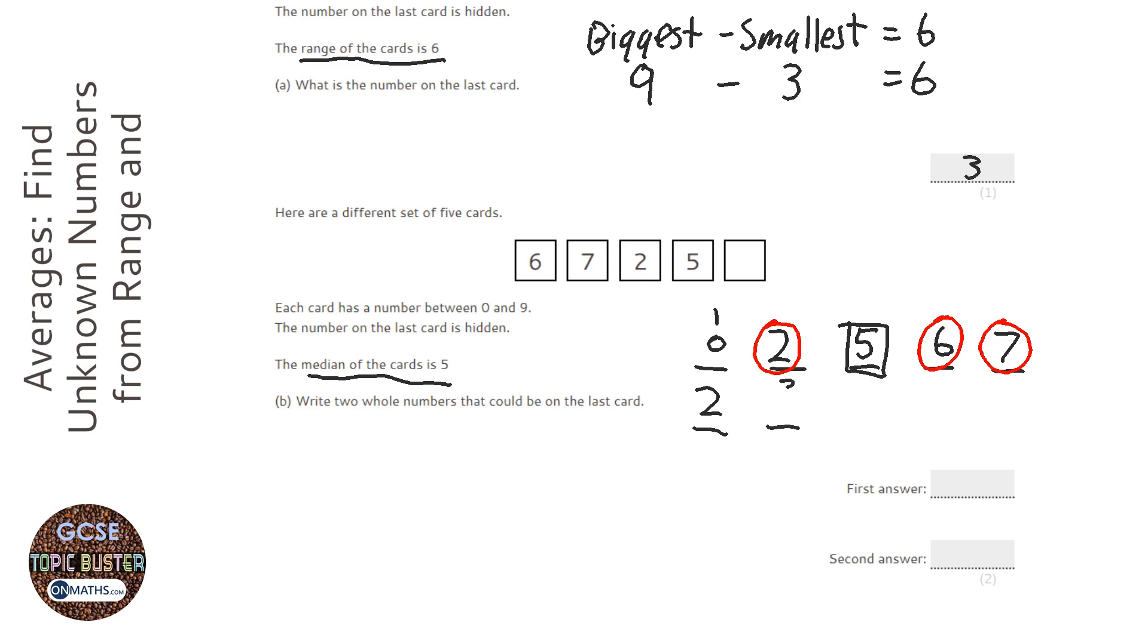And we could have a three or a four. And technically, if the cards don't have to be different, we could have had another two, we could have had another five. So my first answer I'm going to put zero, and second answer it could be a one, but it could have been a two, three, four, or a five as well, and that would work.